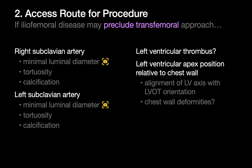Finally, in patients with ilio-femoral or abdominal aortic disease that might prevent a standard transfemoral approach, provide additional assessments if folks opt for, say, a subclavian or transapical access route for TAVR.